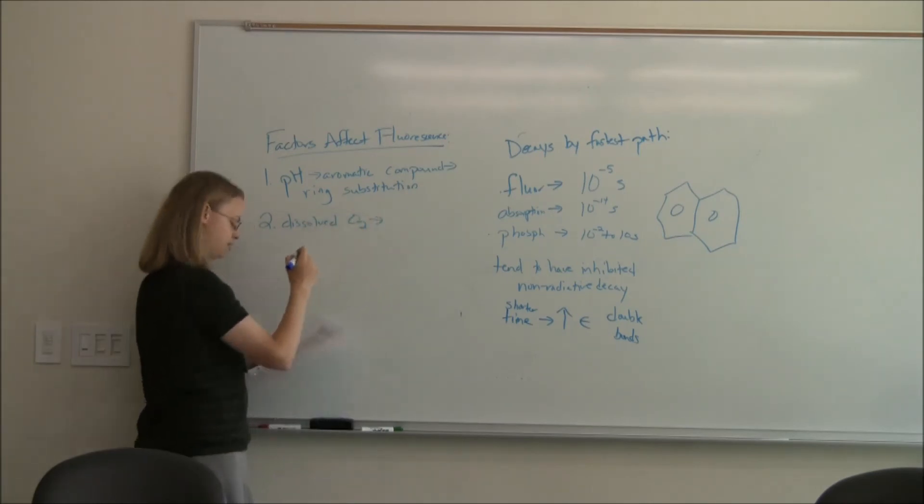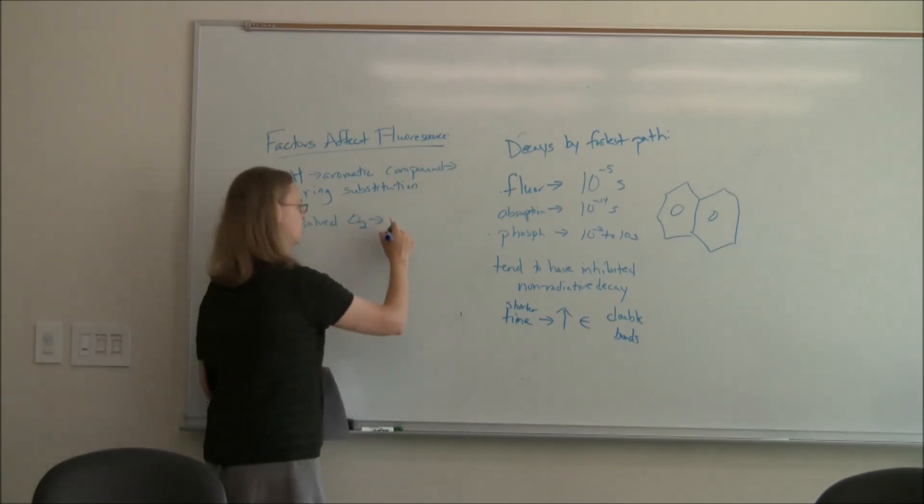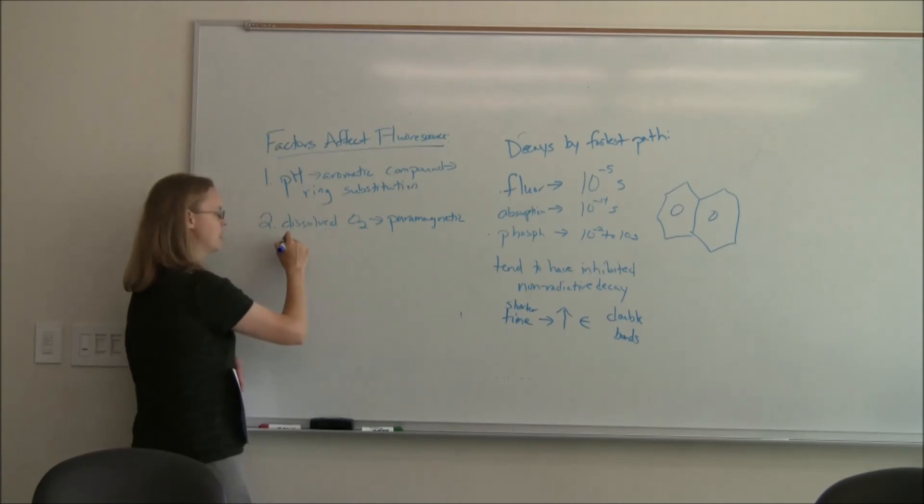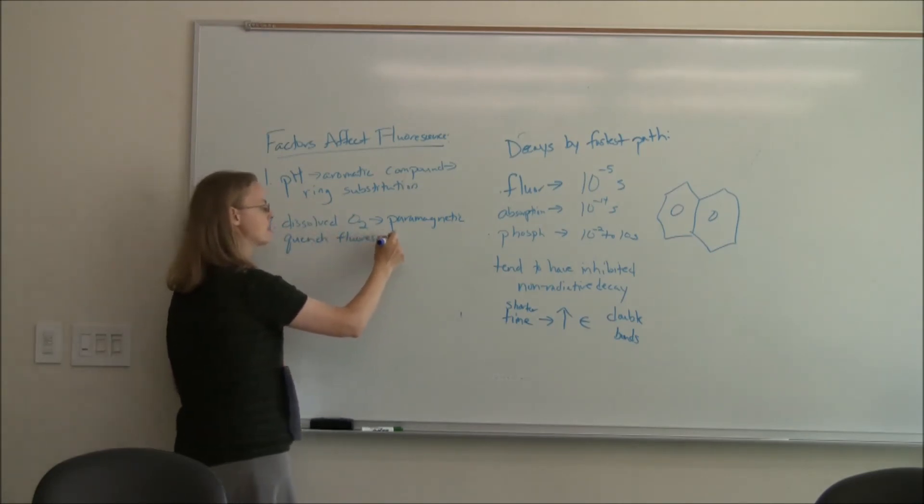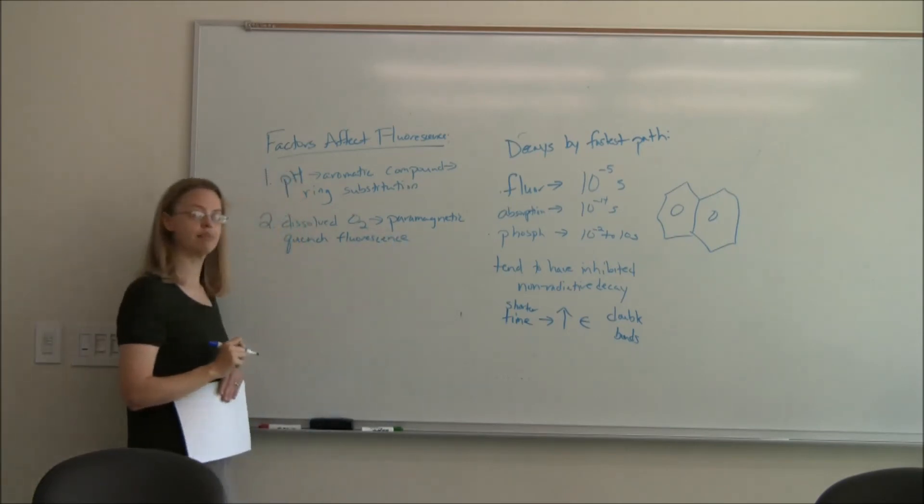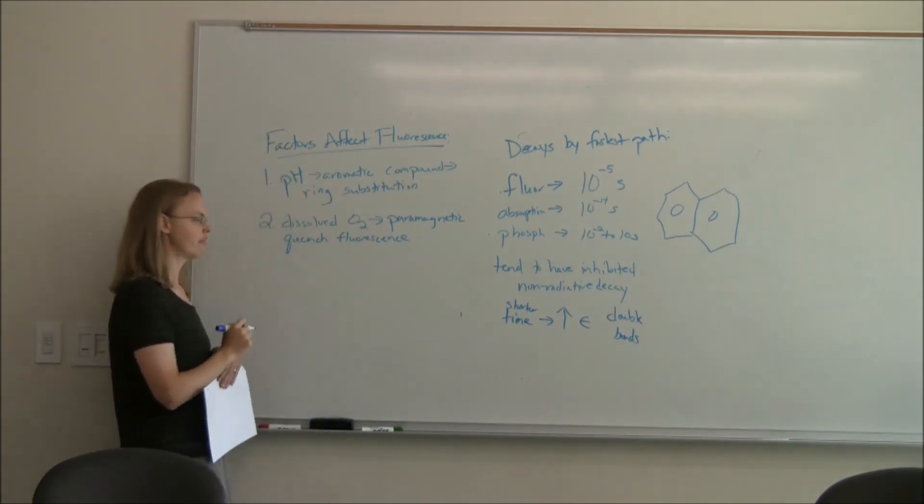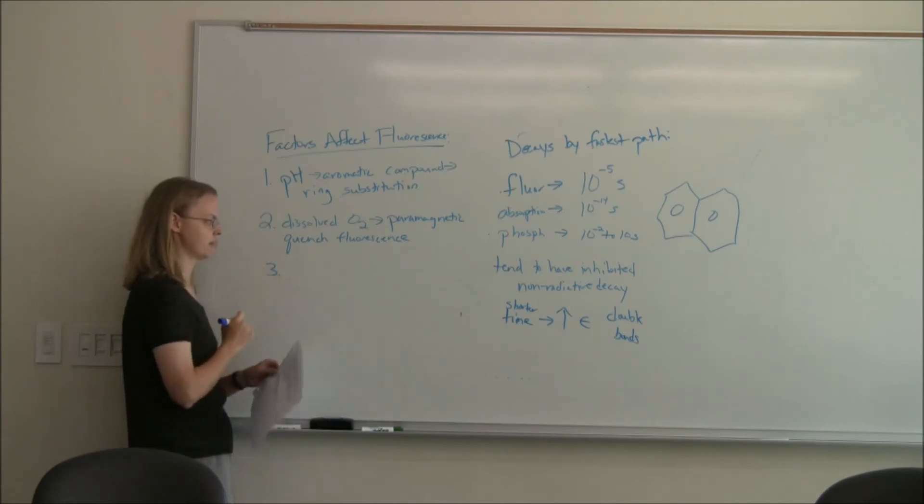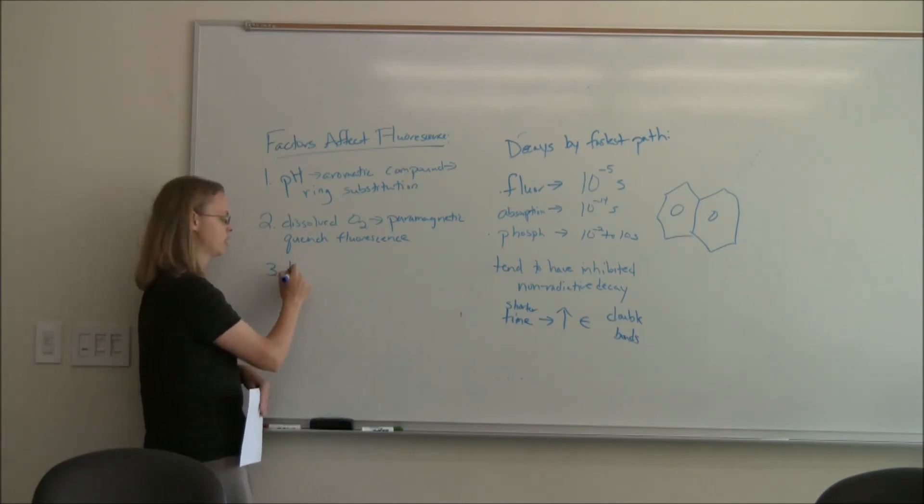What we're going to look at in this lab is oxygen. Oxygen is paramagnetic. And so it's often able to oxidize and then to quench fluorescence. How does it do that? It reacts with it and it provides a faster pathway to ground. If it's a faster pathway to ground, then you don't get as much fluorescence. So we're going to look at oxygen quenching.